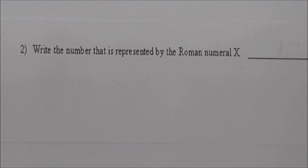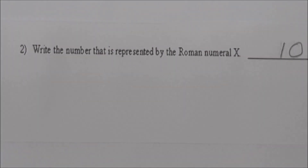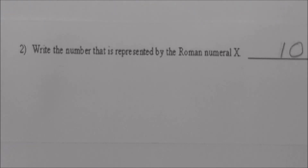Read number 2. Write the number that is represented by the Roman numeral X. What number is represented by X? 10. Write it on the line. Very good. Now let's go over some Roman numerals — remember you use capital letters. For 5, capital V. For 50, capital L. For 100, capital C. For 500, capital D. For 1,000, capital M. Very good.